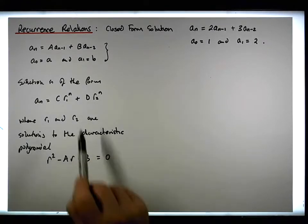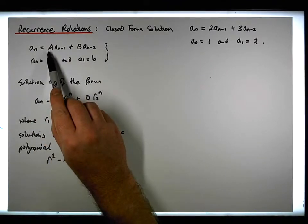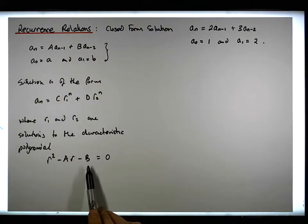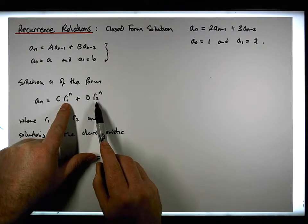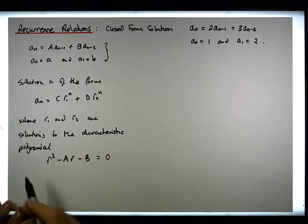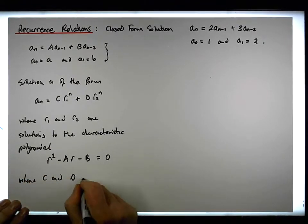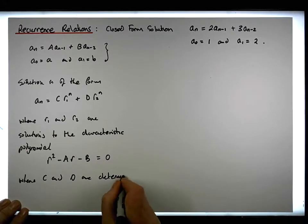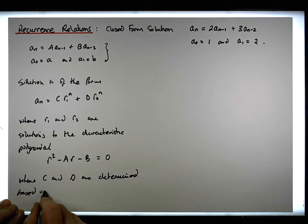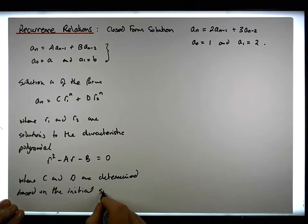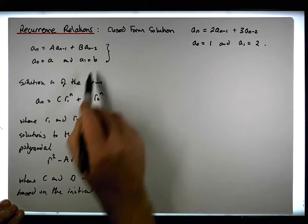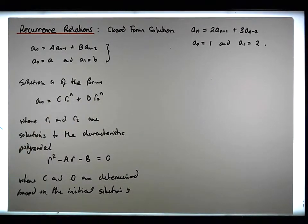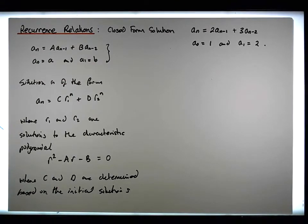To find r, we look at the recurrence provided, take the coefficient of the first preceding term (that's A) and the coefficient of the second preceding term (that's B), and solve the characteristic polynomial. This gives us two roots r₁ and r₂. Then we need to find C and D, which are determined based on the initial conditions — a₀ and a₁ — giving us a system of equations to solve for C and D, which yields the full closed form answer.